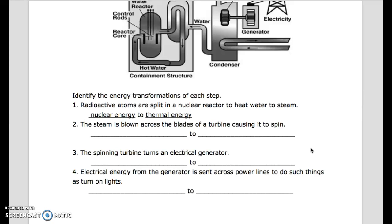Step 1: Radioactive atoms are split in a nuclear reactor to heat water to steam. Nuclear energy to thermal energy. Step 2: The steam is blown across the blades of the turbine, causing it to spin. Blank to blank. Step 3: The spinning turbine turns an electrical generator. Blank to blank. Step 4: Electrical energy from the generator is sent across power lines to do such things as turn on lights. Blank to blank.